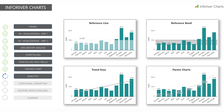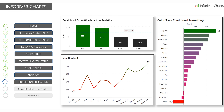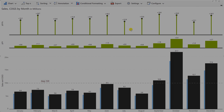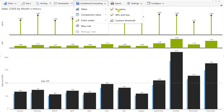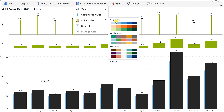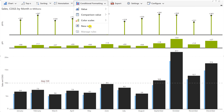Analytical elements like reference lines and bands, trend lines, and even Pareto lines give a new dimension to your data. You can even use these analytical elements for creating conditional formatting and alerts. The conditional formatting is a highly advanced feature with options like color scales, gradient lines, and more.